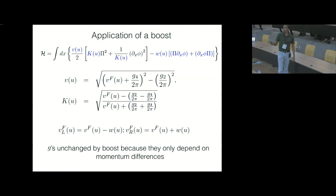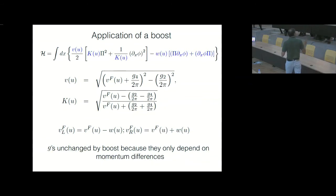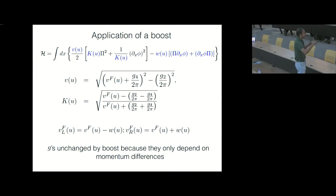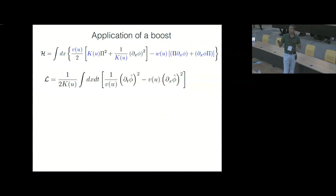What's important is that the g's sitting here are unchanged by the boost, because we assume the interactions are momentum conserving — so even if you change every momentum by the same amount, the interactions remain unchanged. The only change to k and v is coming from this factor vf(u), which explicitly contains u.